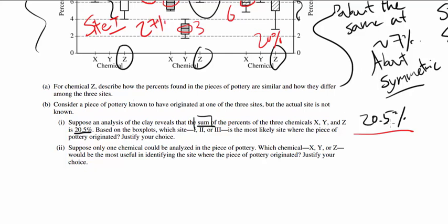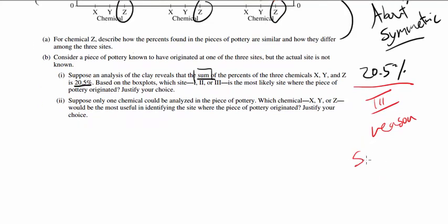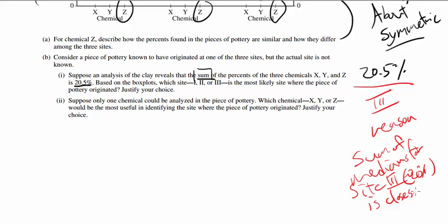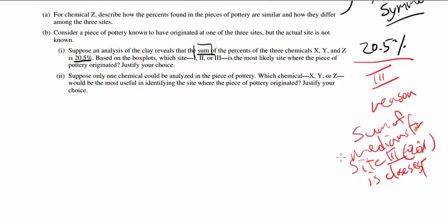Hey, 20 percent is pretty close to 20.5. So I say site 3, and the reason is I would state the sum of the medians for site 3, which is about 20 percent, is closest to 20.5 percent. So that's the reason.